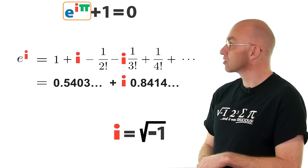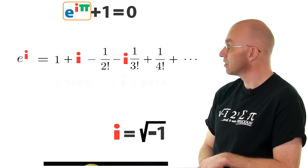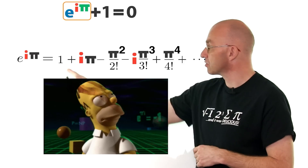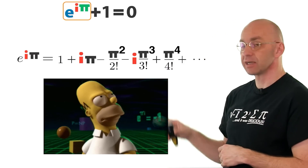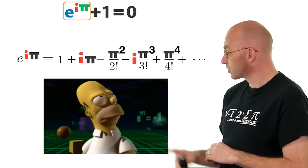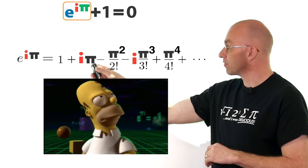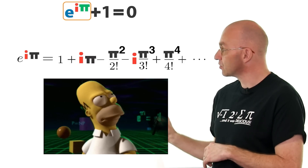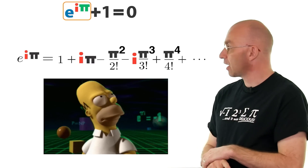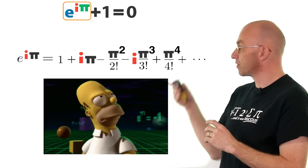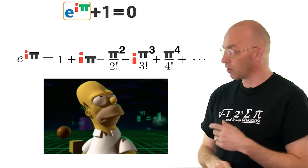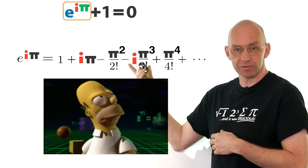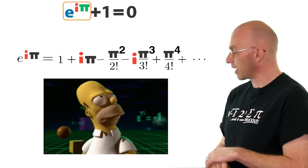Once we've got that, it's not a big deal to do what the identity asks. We chuck i pi in. Then, adding every second term gives us minus one, and all the terms with i in front of them cancel out to zero. This gives us our identity. You can actually do this adding-up business to maybe 50 terms and convince yourself — we're getting really close to minus one for the non-i terms, and getting close to zero for the i terms. That's pretty good evidence that it's actually true.